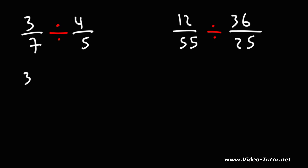So let's do that. We're going to keep the first fraction the same, change division to multiplication, and flip the second fraction. So now we could just multiply across.